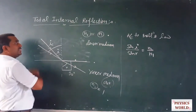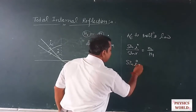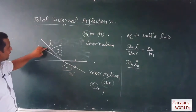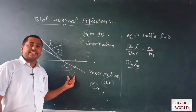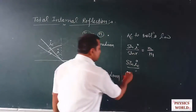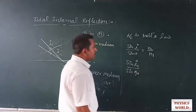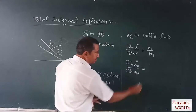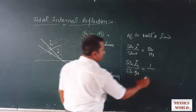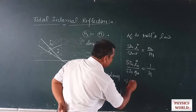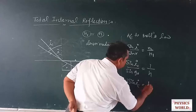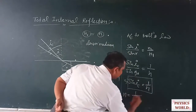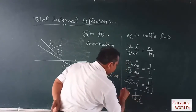At the critical angle ic, the angle of refraction becomes 90 degrees. So we put i = ic and r = 90 degrees in Snell's law. This gives us n2 = 1 and n1 = n, so we find that sin(ic) = 1/n, because sin(90°) = 1. From here we also get n = 1/sin(ic).